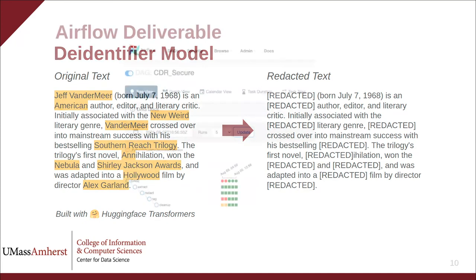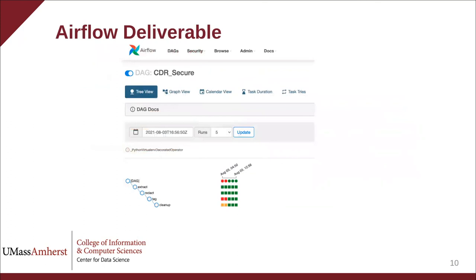Our final deliverable for the summer was a working prototype of our proposed system running as an Apache Airflow graph. Airflow is an open-source tool for managing and monitoring complex data workflows and is already being used by the CDR team for data processing. The system automatically performs all the steps we implemented in a secure and reproducible way.